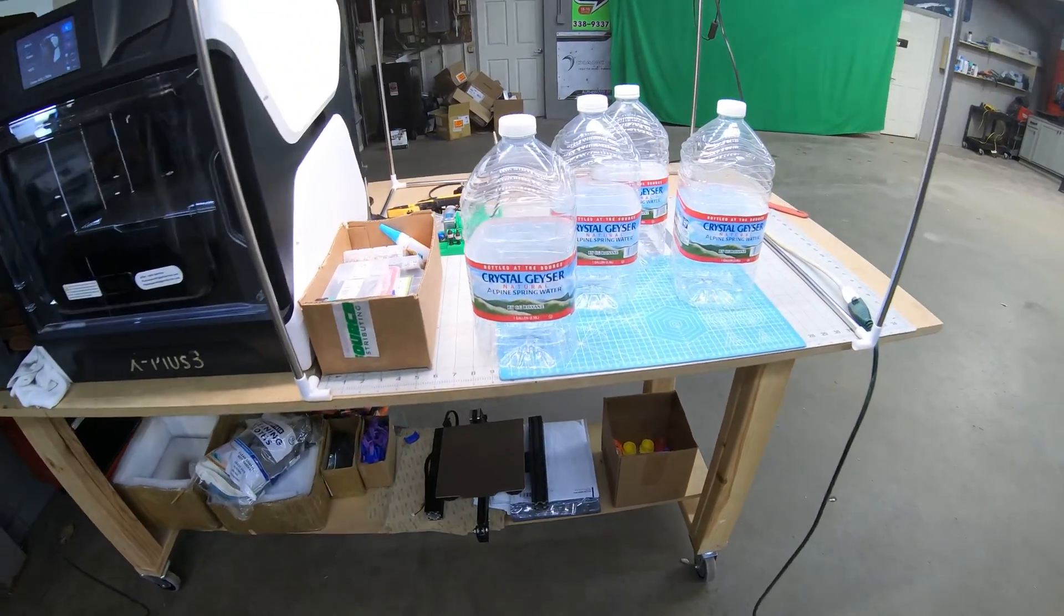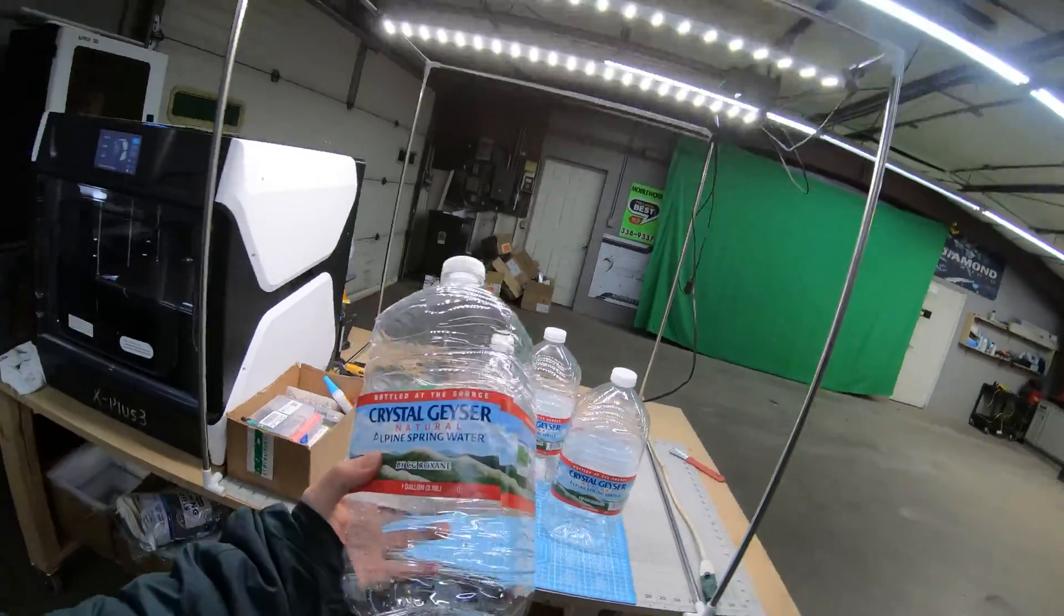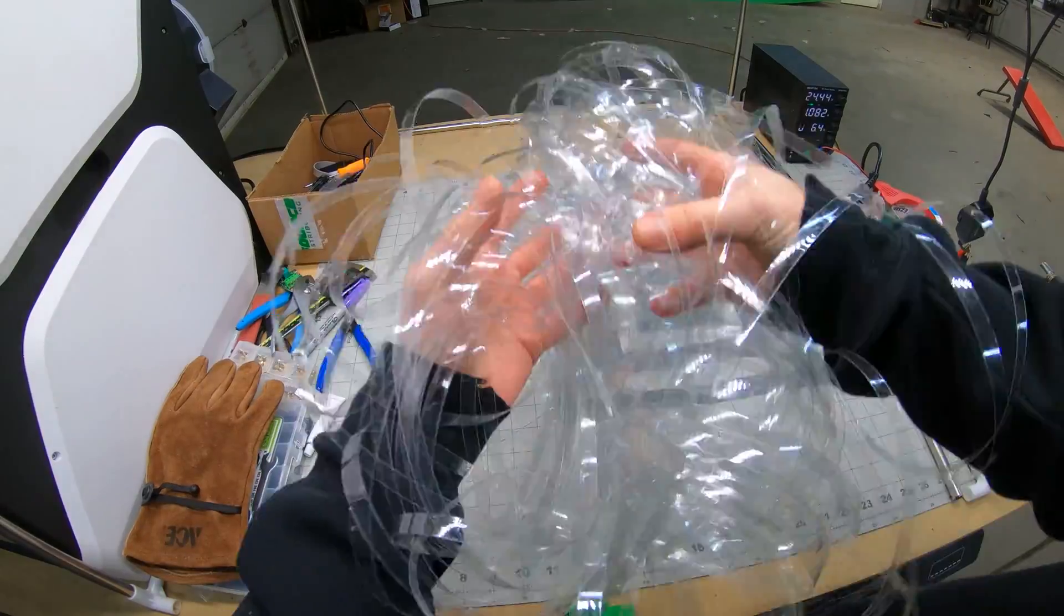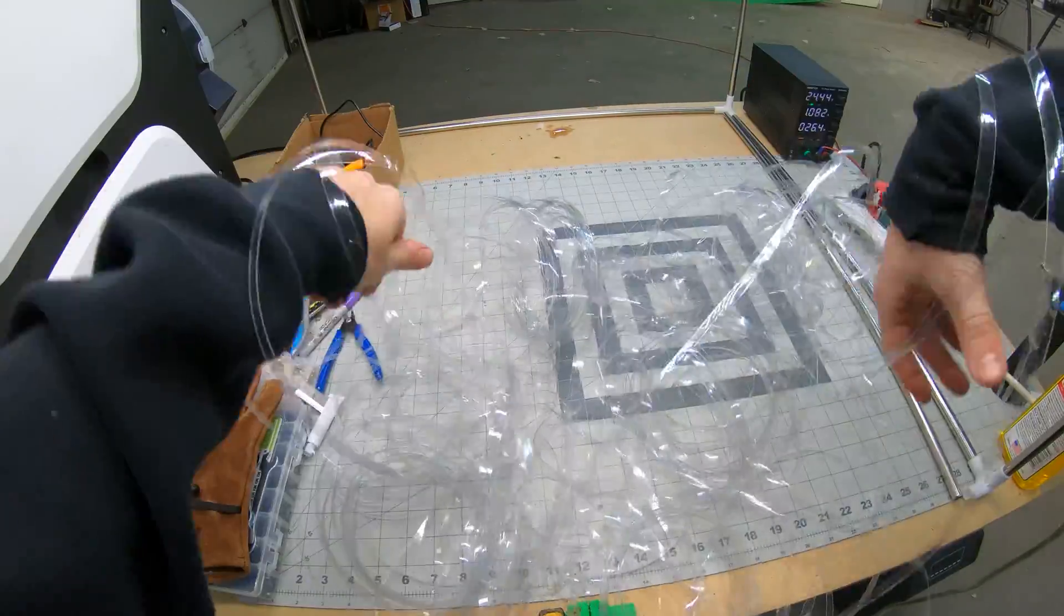Next, you need PET plastic bottles. The larger the bottle, the better, because it'll give you a higher yield. Also note the thickness of the bottle. Bottles with thicker plastic need to be cut thinner, otherwise it'll make it difficult on the machine to polstrude correctly. A good starting point is 8mm thickness.